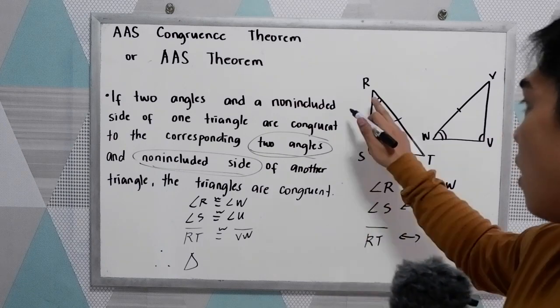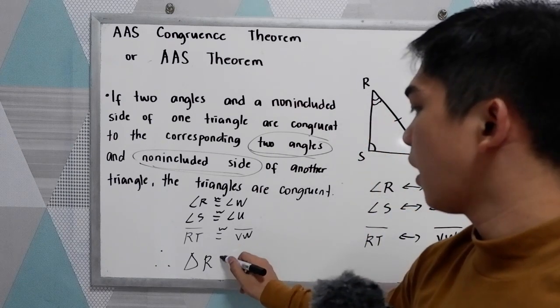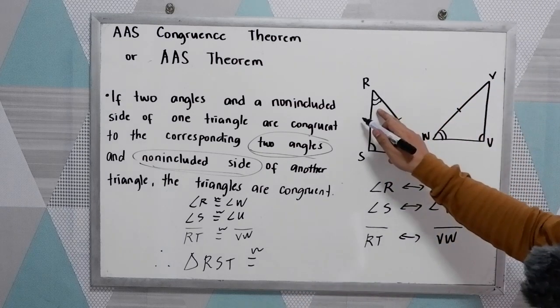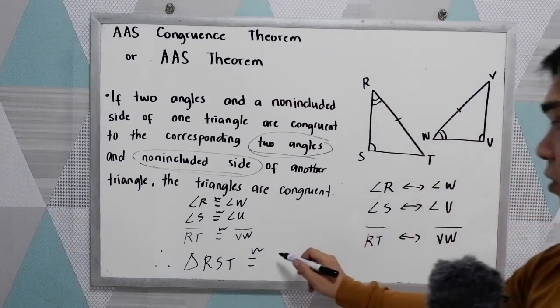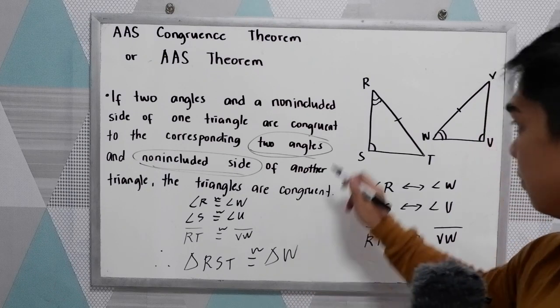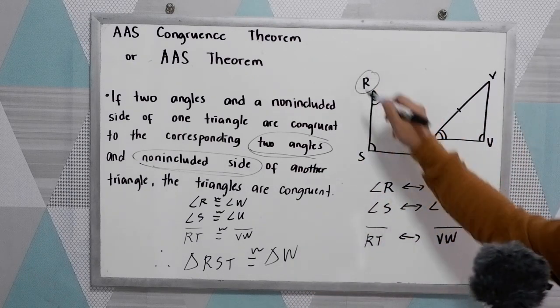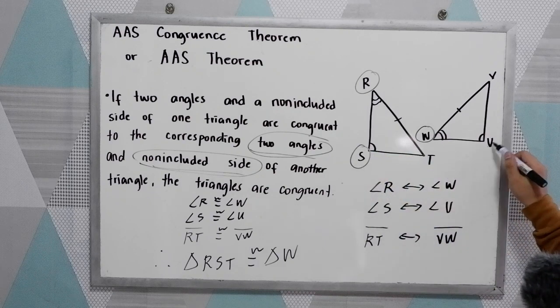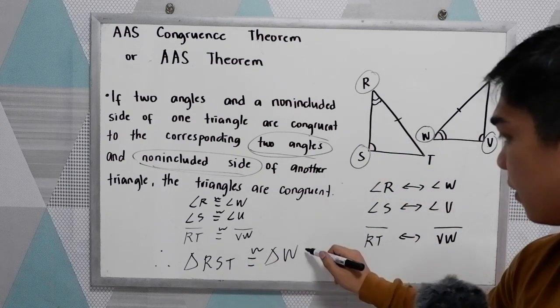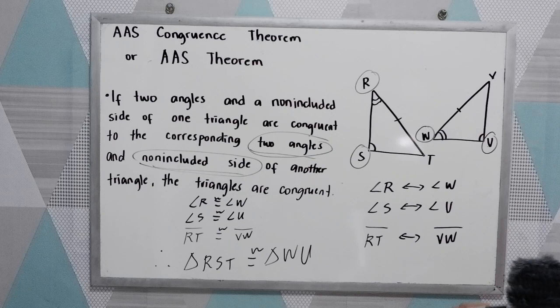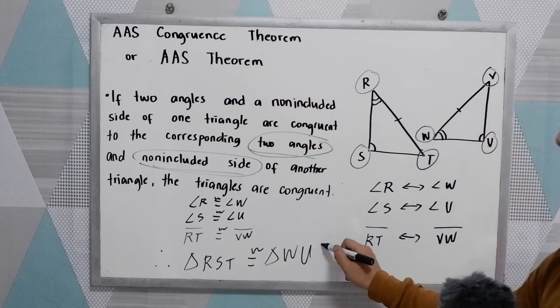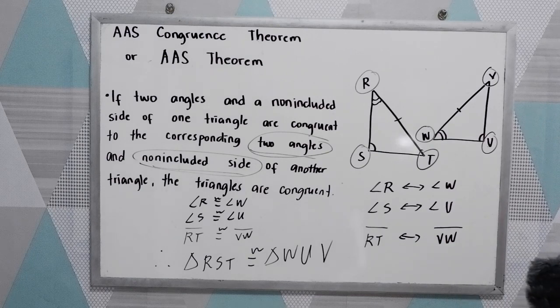Triangle RST is congruent to... R corresponds to W, S corresponds to U, and T corresponds to V. So triangle RST is congruent to triangle WUV.